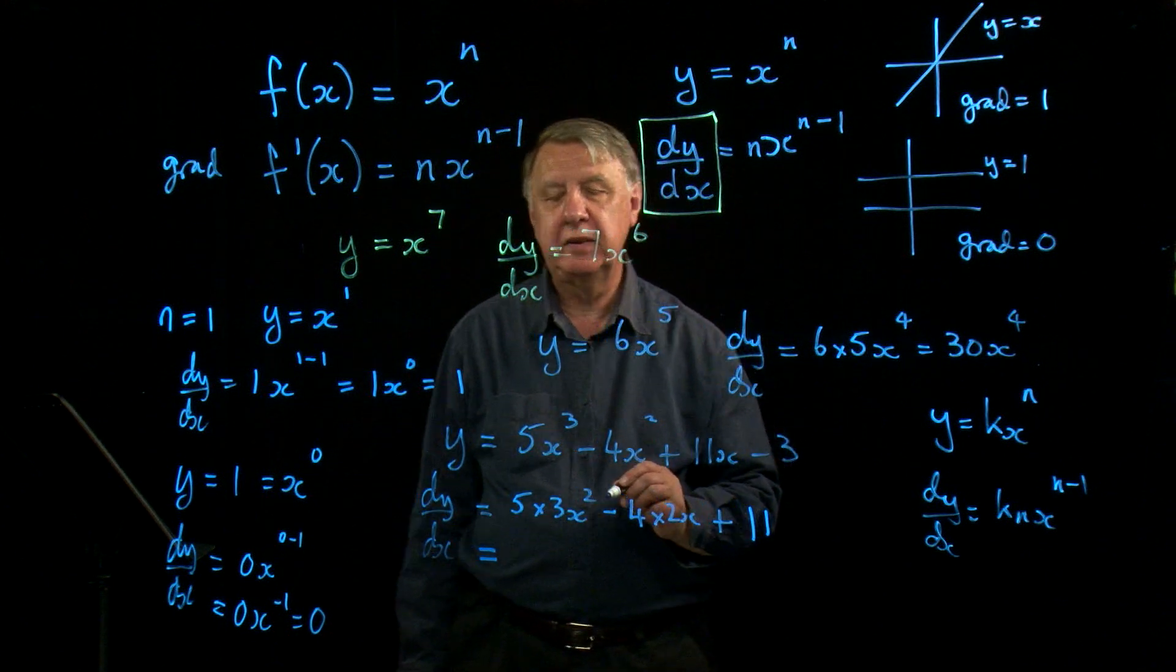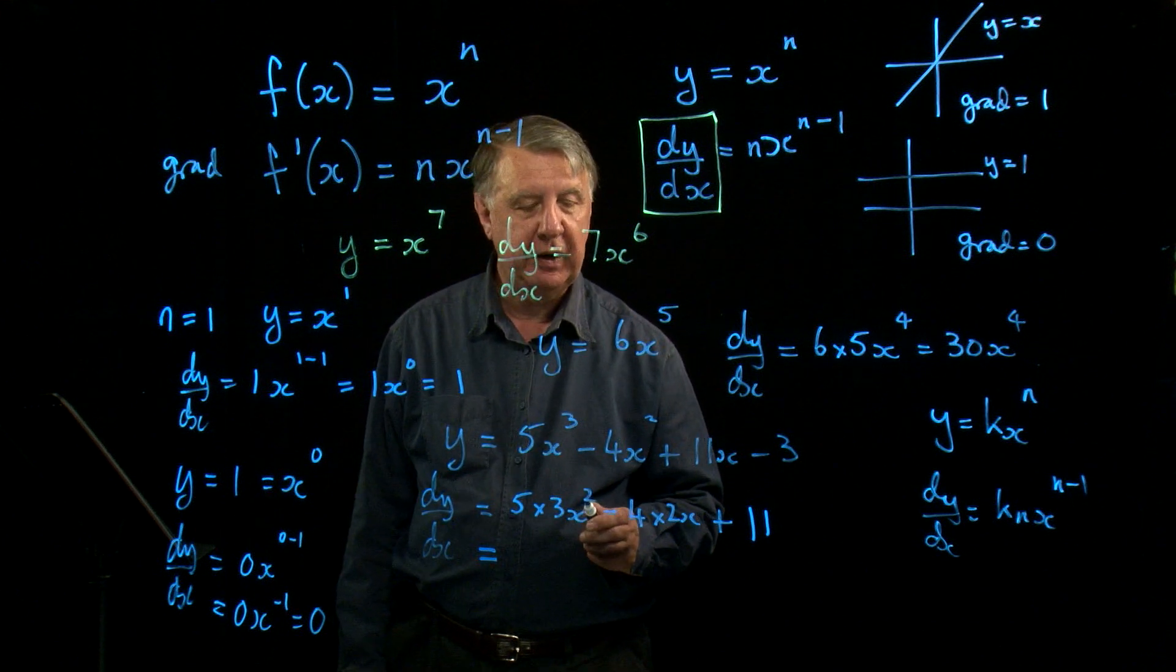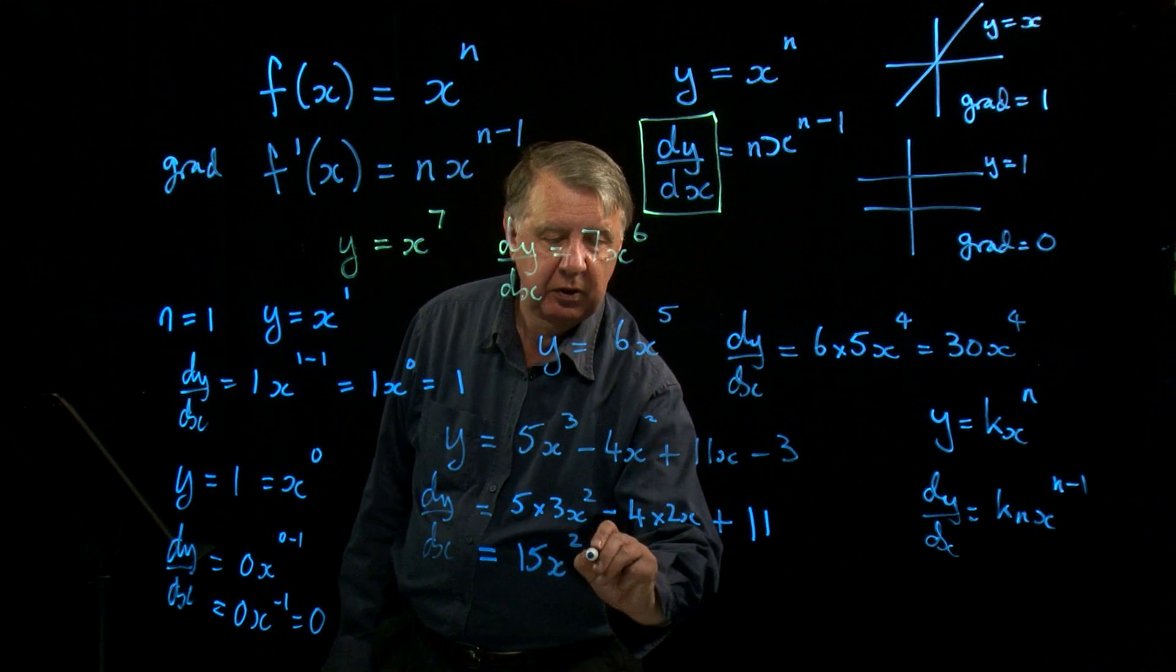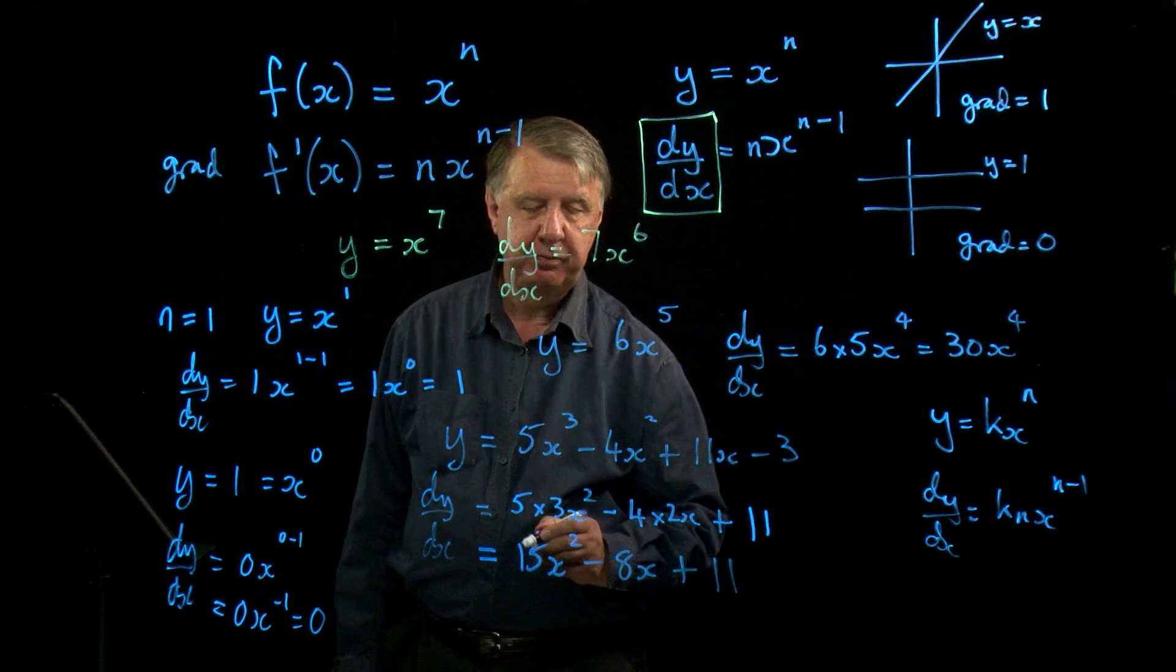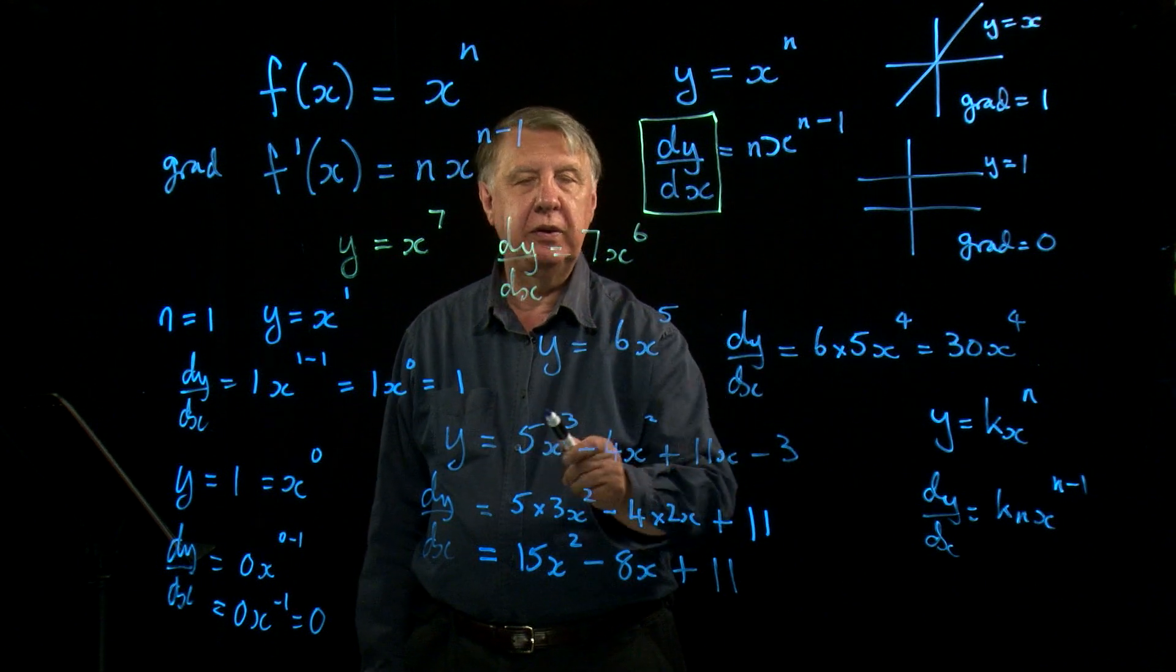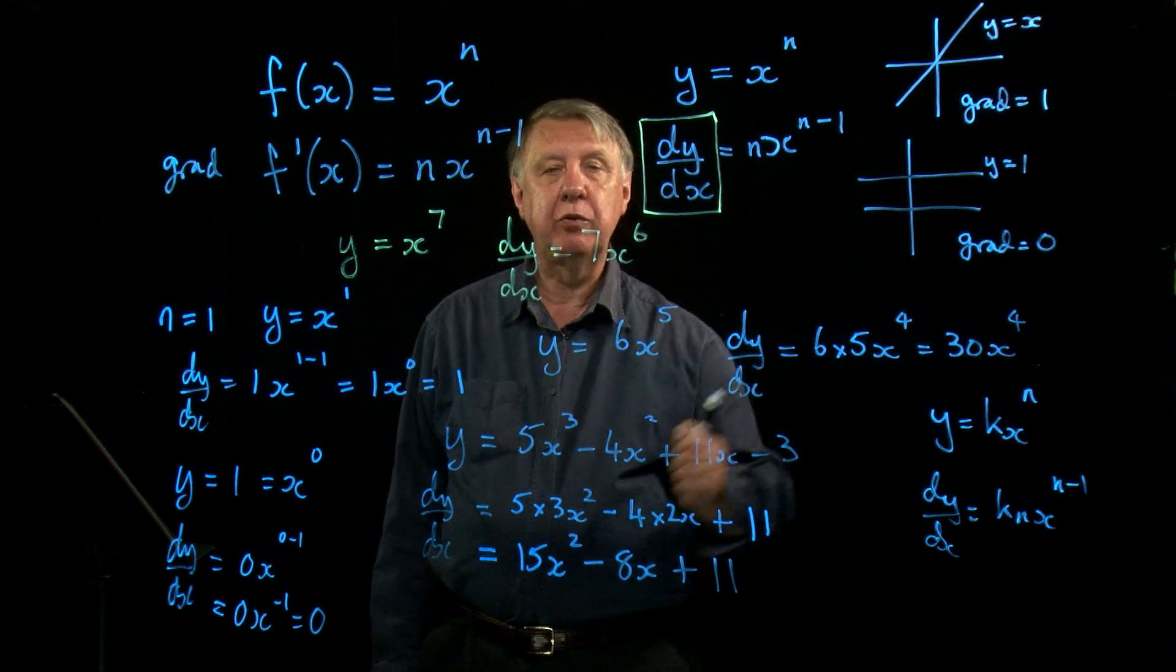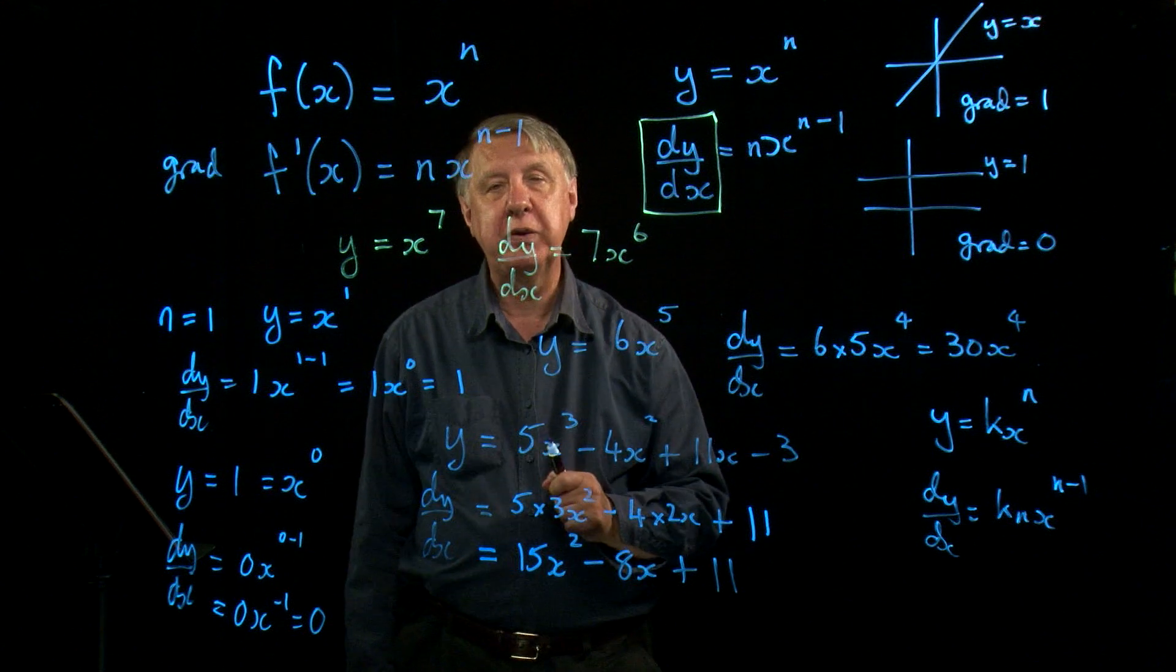The examiners certainly won't like that. And they'll say, well, you haven't finished it until you've tidied it up. So the final answer then: 15x squared, take away 8x plus 11. And you can differentiate any polynomial in that way. Just do it one term at a time. Make use of our kx to the n rule. And just be careful with the tidying up at the end.